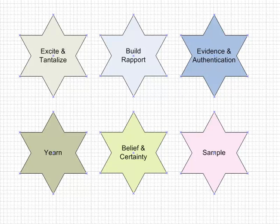So it's all about the six stars here of email marketing. I'm just going to talk through them briefly. And top left we've got excite and tantalize. You've got to get the people on your list excited about what you're going to be offering them.